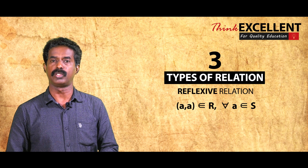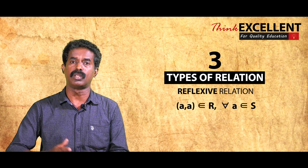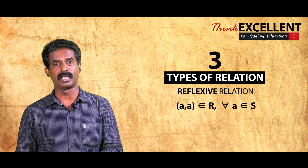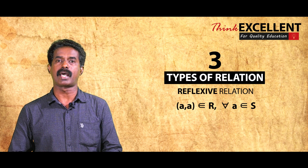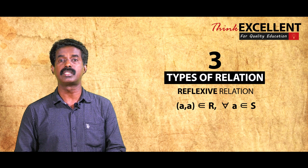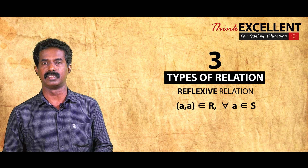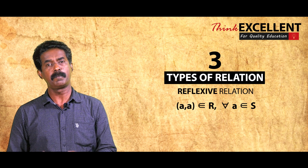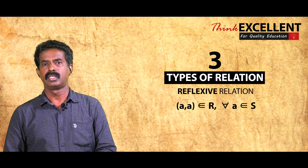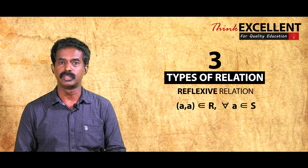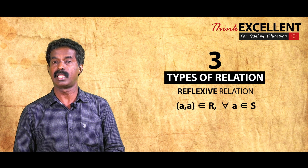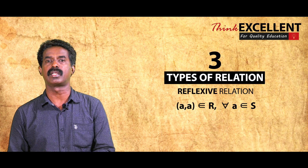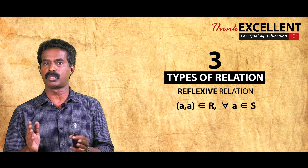For example, 'equal to' is reflexive: 5 = 5, 7 = 7. Parallel is reflexive: line L is parallel to line L. Congruence of triangles is reflexive: triangle ABC is congruent to triangle ABC. However, perpendicular is not reflexive — the x-axis is not perpendicular to itself. Less than is also not reflexive: 5 is not less than 5.